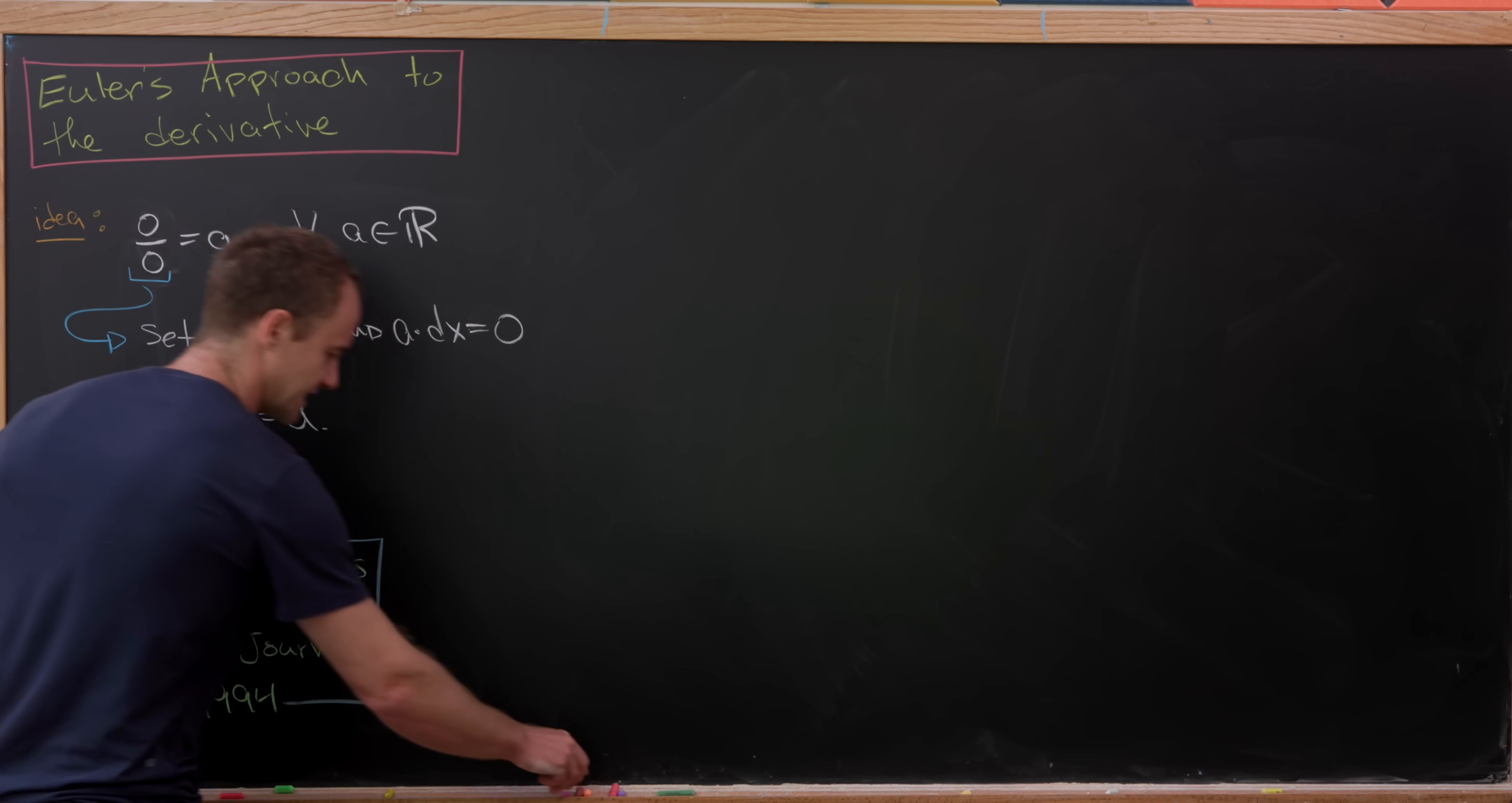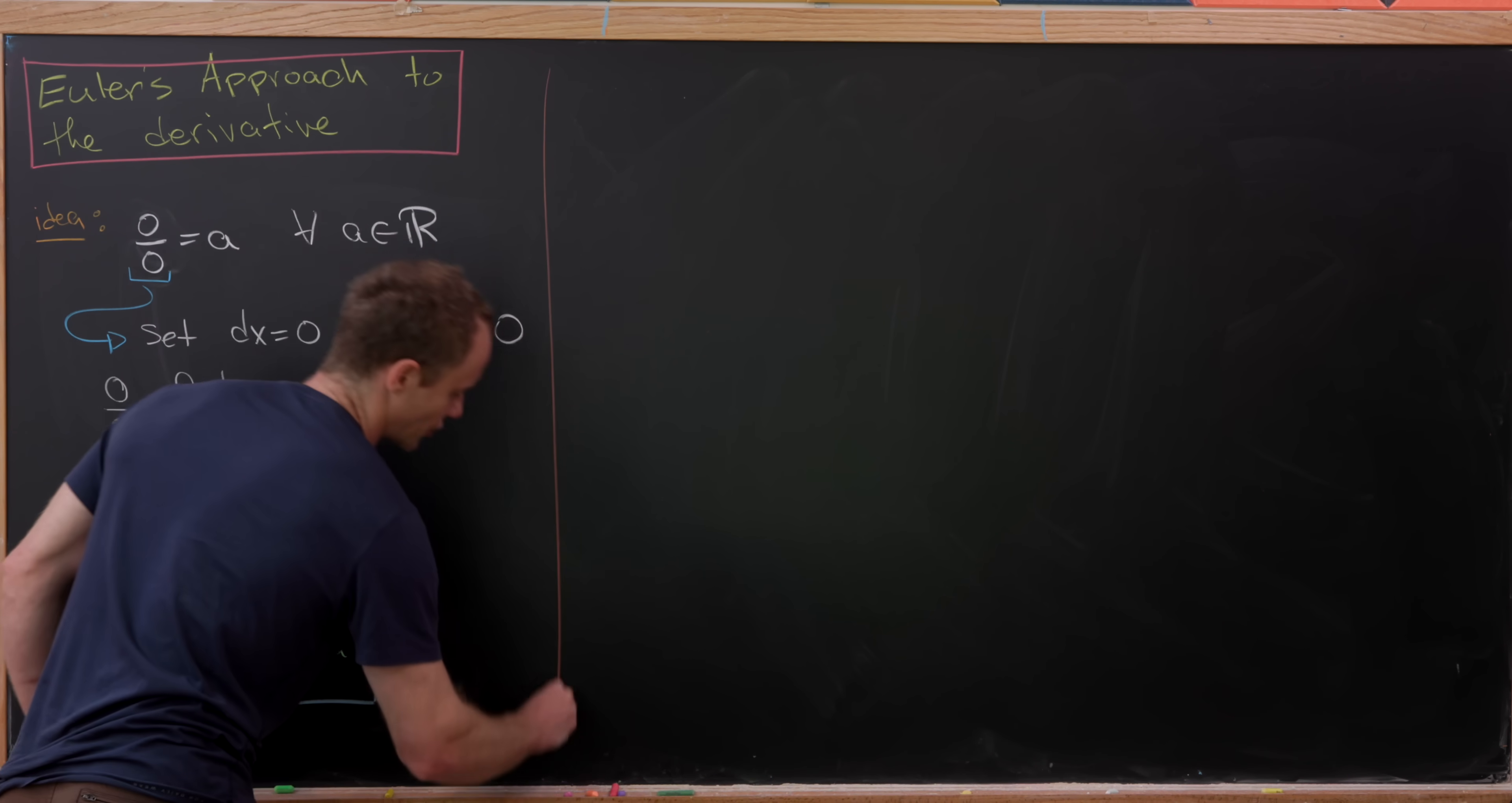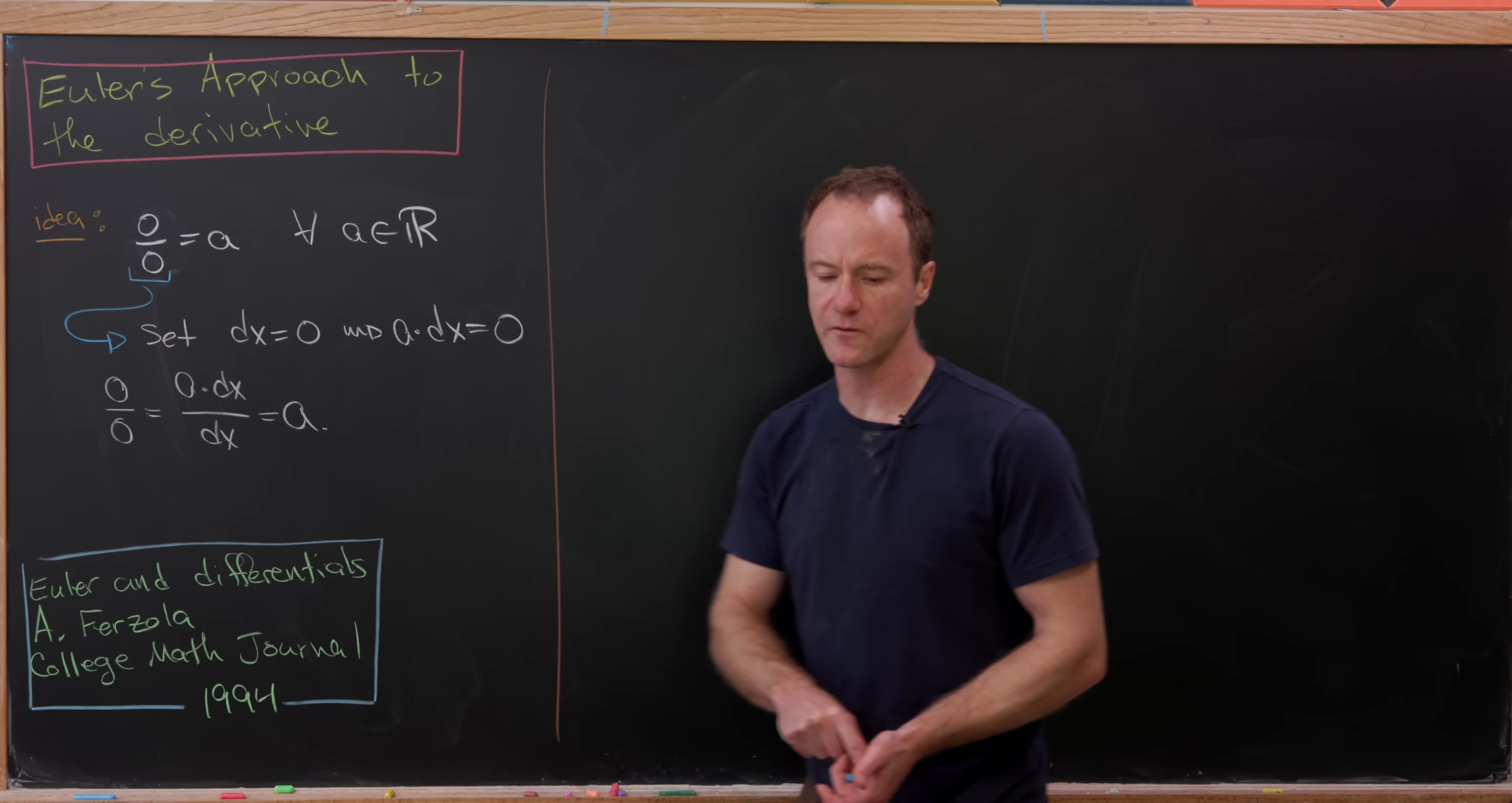But then, now we could take this quotient, zero over zero, and rewrite it as A times dx over dx, which clearly simplifies to the number A. So that's a way to get started here.